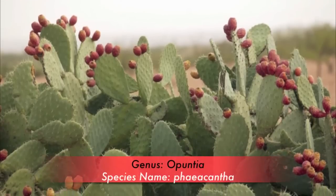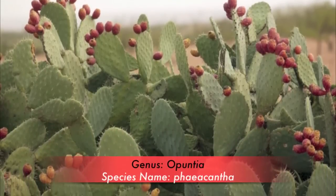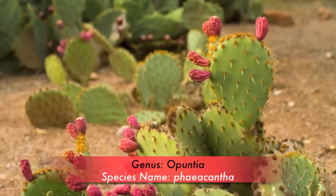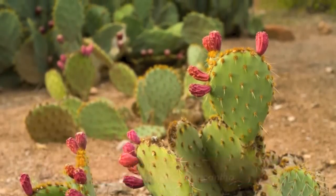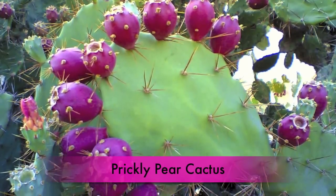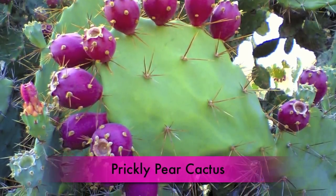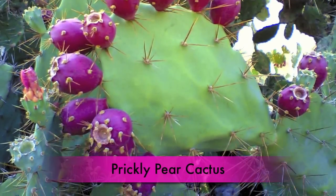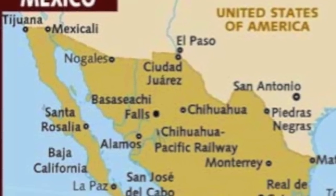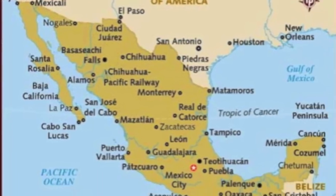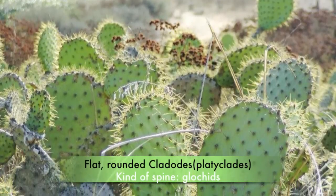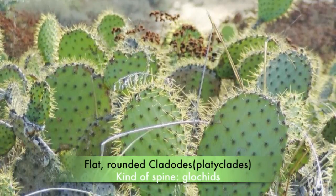One of these plants is the prickly pear cactus. Its genus name is Opuntia, while its species name is Polyacantha. Like all true cactus species, the prickly pear cactus is native only to the Western Hemisphere. However, they have been introduced to other parts of the globe. Now they can be found in abundance in Mexico. They typically grow with flat, rounded cladodes, also called platyclades.